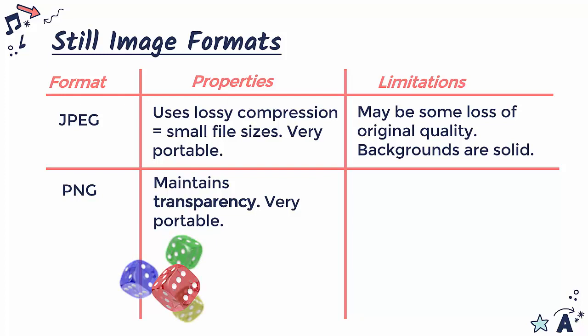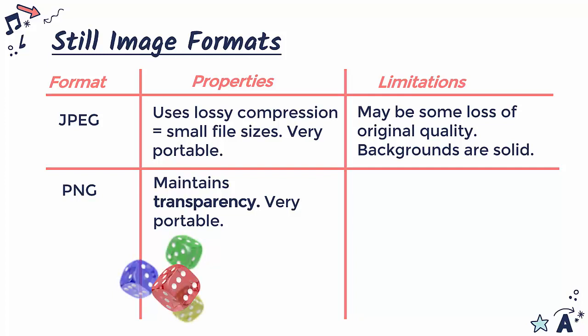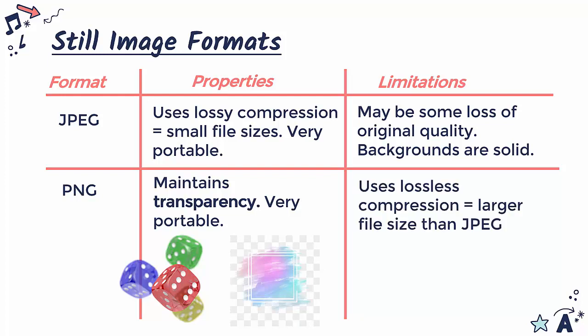This image here is stored as a PNG and as you can see when I animate it, it is transparent - we can see that orange table line below. Whereas if we had a JPEG like this image, the background is not transparent - we often have just a white background or maybe a checkerboard to indicate that nothing is there, but it's not transparent. We can't use that transparency like we can with PNG. In terms of limitation, PNG does use lossless compression as opposed to lossy for JPEG, so your file sizes will generally be larger than JPEG.